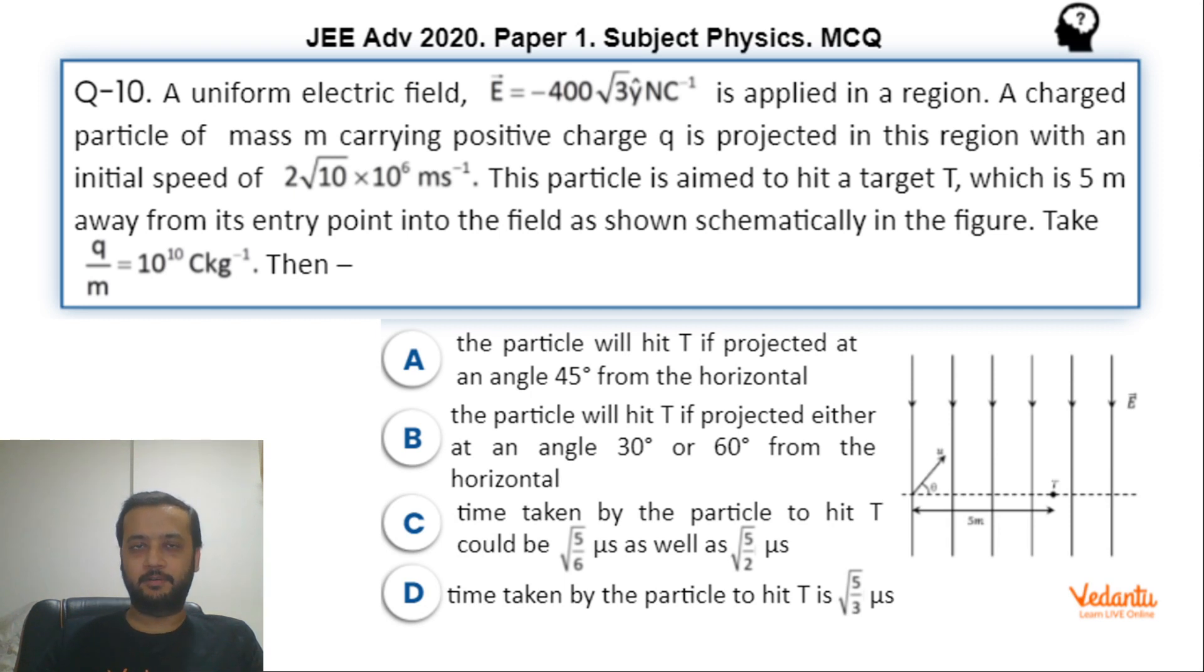However, discussion was pretty simple and straightforward, a regular question. Hence any good student would have solved this question completely without taking too much time. Electric field ka value diya gaya minus 400 root 3 y cap, matlab downward direction me. There was a charged particle projected with this speed in this region and a target kept at point T, 5 meters away from the point of projection. Charge to mass ratio bhi diya gaya tha, and it was asked at which angle to launch so that target hit ho jayega, and time of flight nikalna tha.